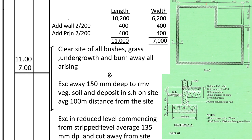We shall take the total external dimensions of the length: 200 plus 600 plus 200 plus 4000 plus 200, giving 10,200. For the width it's 6,000 plus 400 plus 200, also 10,200. Then we add the walls — 400 — and the projection of 200 on each side, adding another 400. So the total length is 11,000.